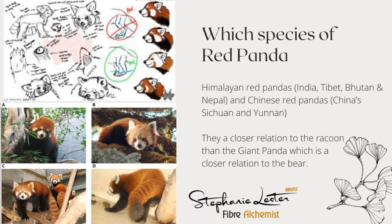The bottom two show the Himalayan — the third one down is the female and the bottom one is the male. The female has a lot more white on her face. If you look at the male Himalayan at the bottom and the female Chinese Red Panda, you can still see the Chinese Panda is much redder, although the male Himalayan has more red on the face than the female Chinese one, which has a lot of white patches.